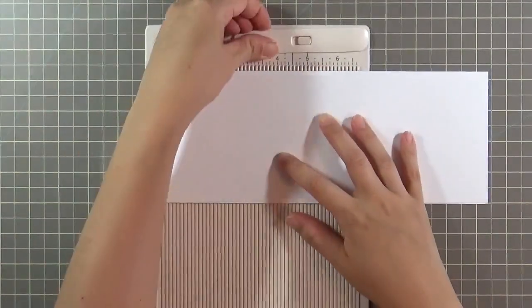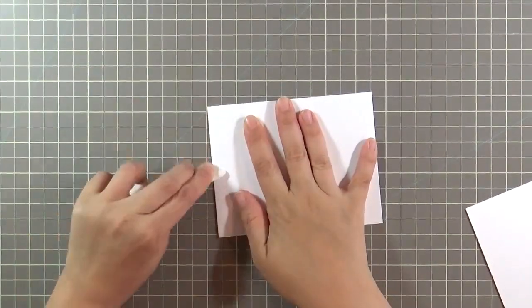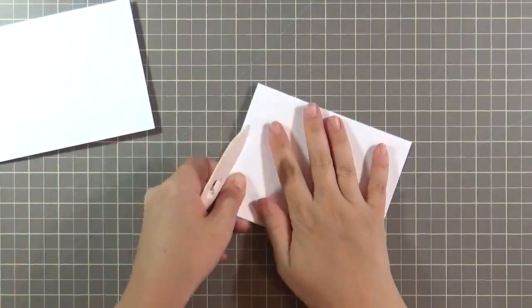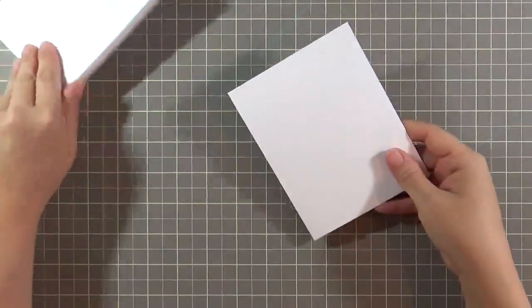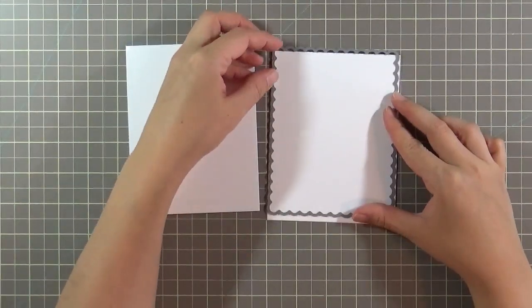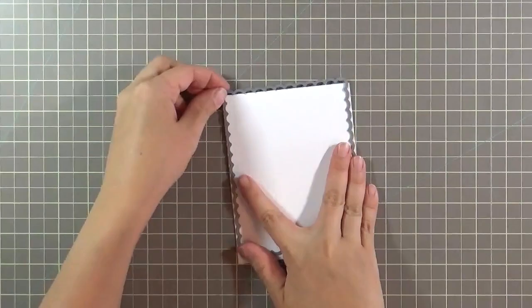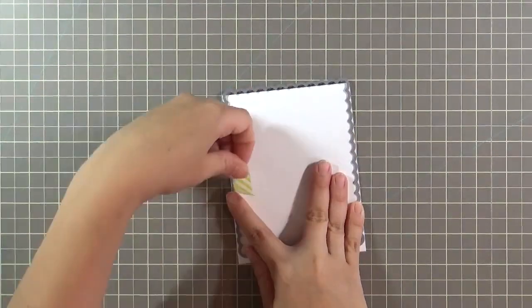Before I get to the die cutting, I do want to make my card bases. So I'm taking a standard A2 size card base and scoring it at the 5.5 inch mark. One of these will go on the outside of the card, and the other one will be tucked on the inside. And because it's on the inside, I do want to make it slightly smaller and give it some added appeal. So that's what I'm using that Lawn Fawn scalloped rectangle die for.